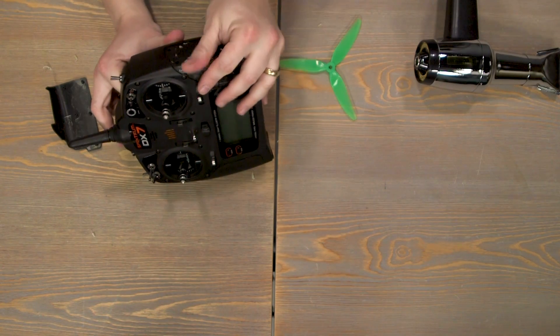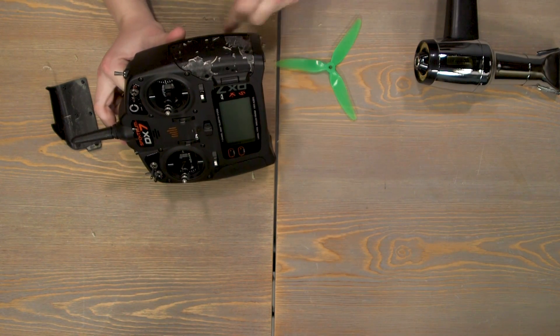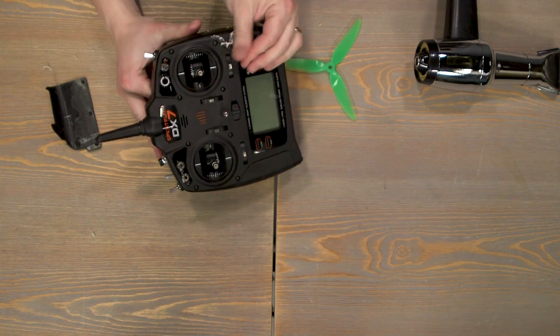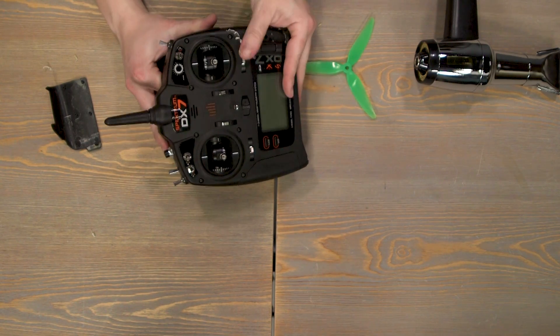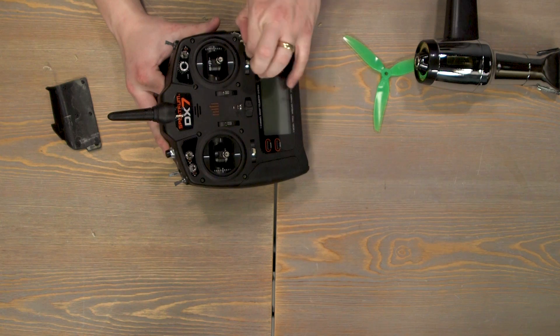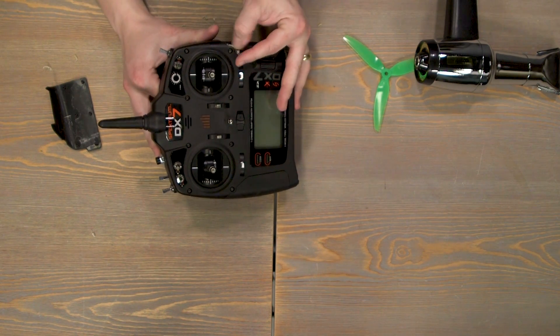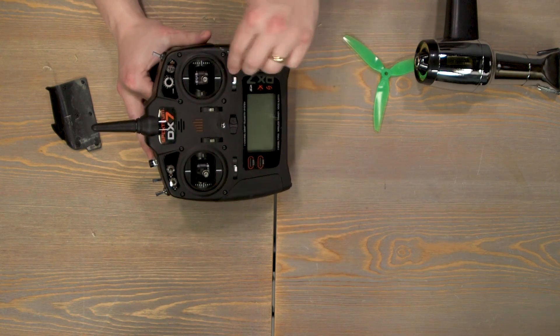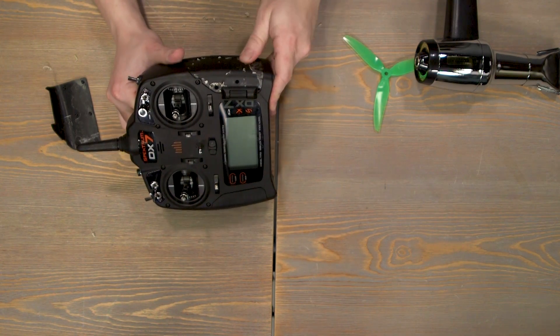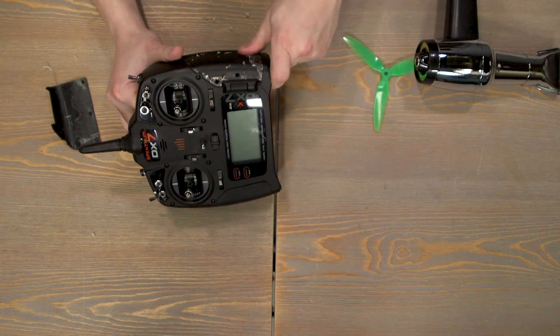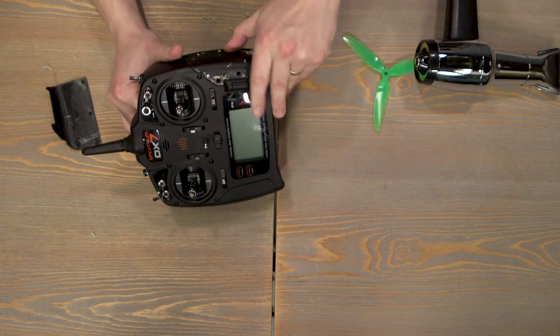If you get it nice and hot, sometimes you can just roll it right off. Might feel a little uncomfortable on your finger, but it seems to work pretty well. Just pull it off like that. And then around the edges, you can use your plastic tool to get the last little bits.